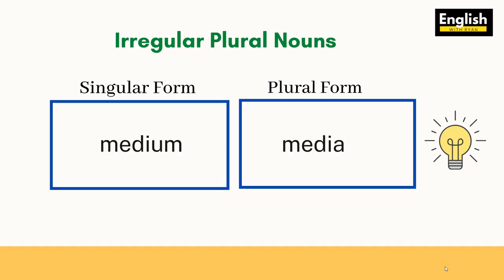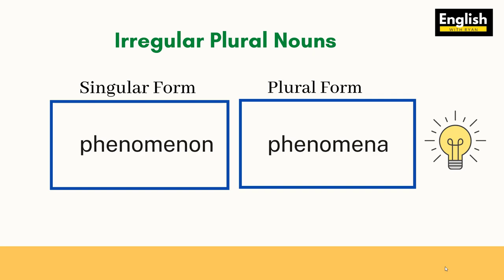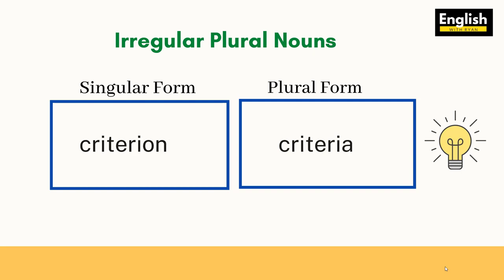One of the most common mistakes I've heard is 'medias,' but you should know that 'media' is already plural and the singular form is 'medium.' So: medium, media. 'Phenomenon' is another very common mistake — the plural form of 'phenomenon' is 'phenomena.' This one is most commonly mistaken — I've heard 'criterias' more than once. The singular form is 'criterion' and the plural is 'criteria.' You should also know that 'bacteria' is the plural form of 'bacterium.'